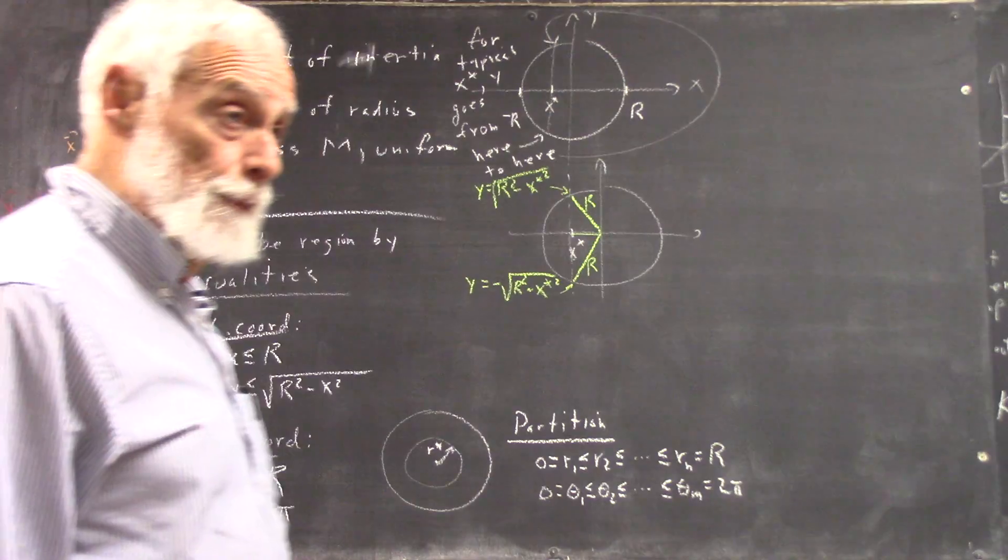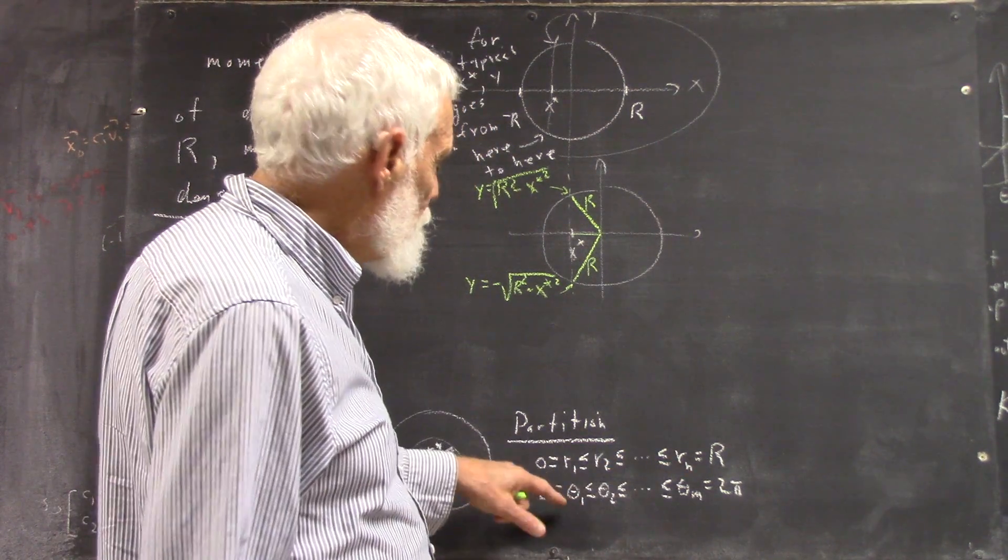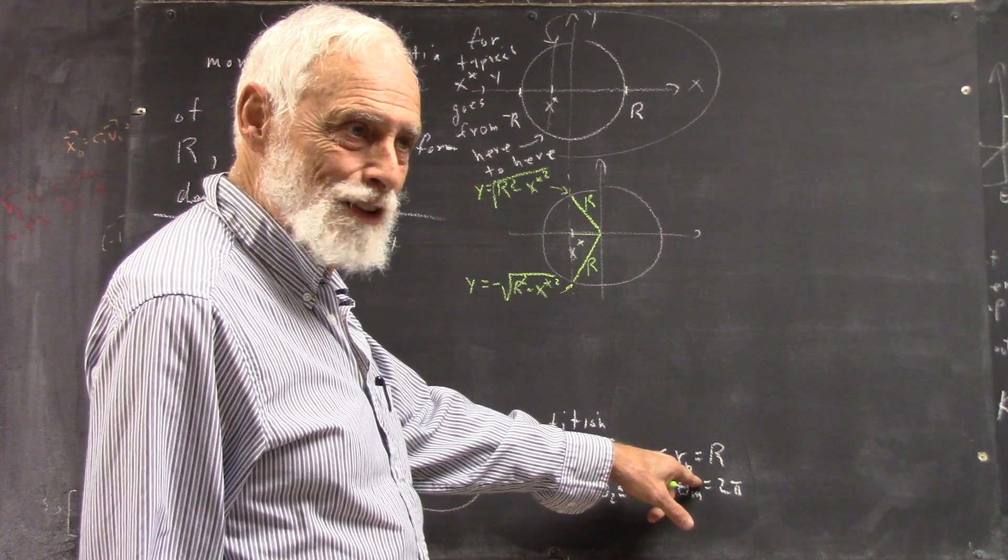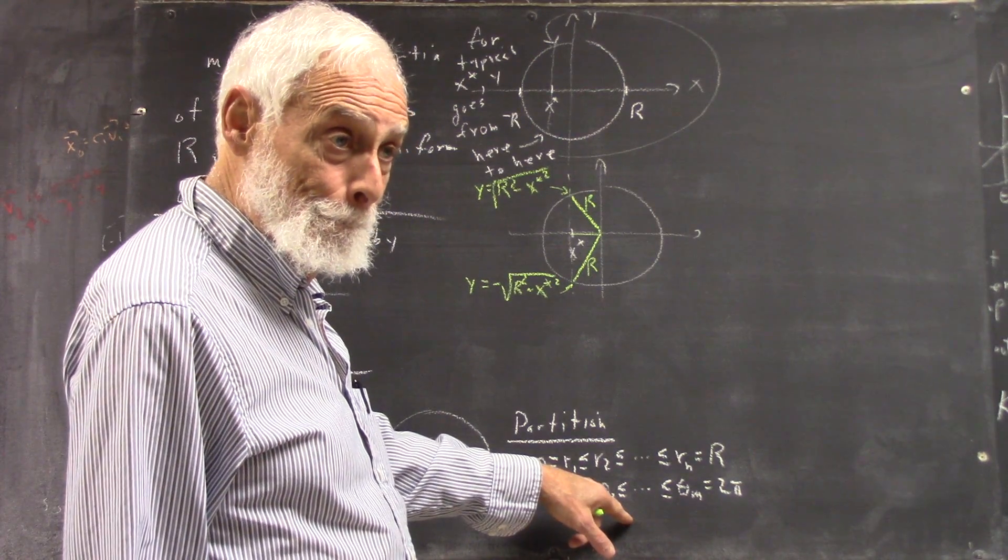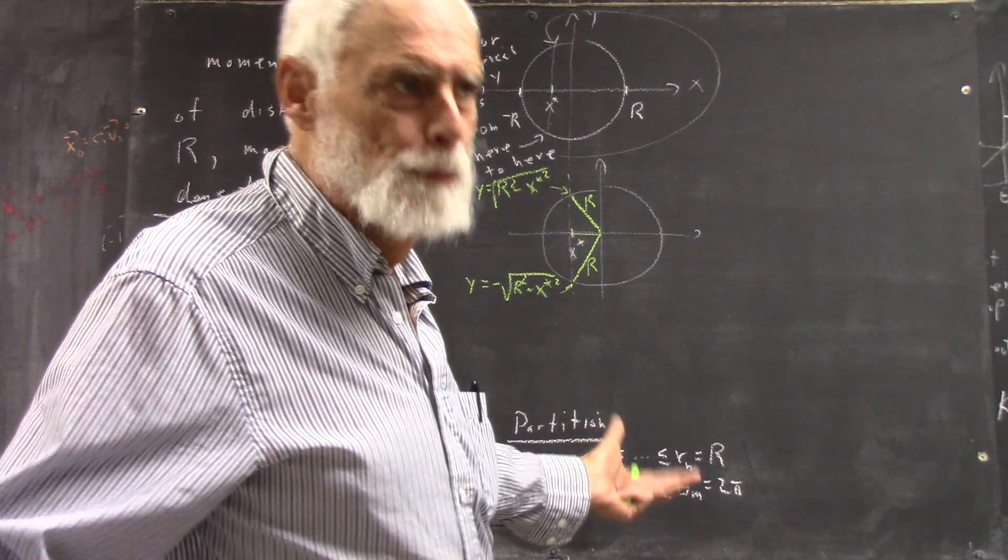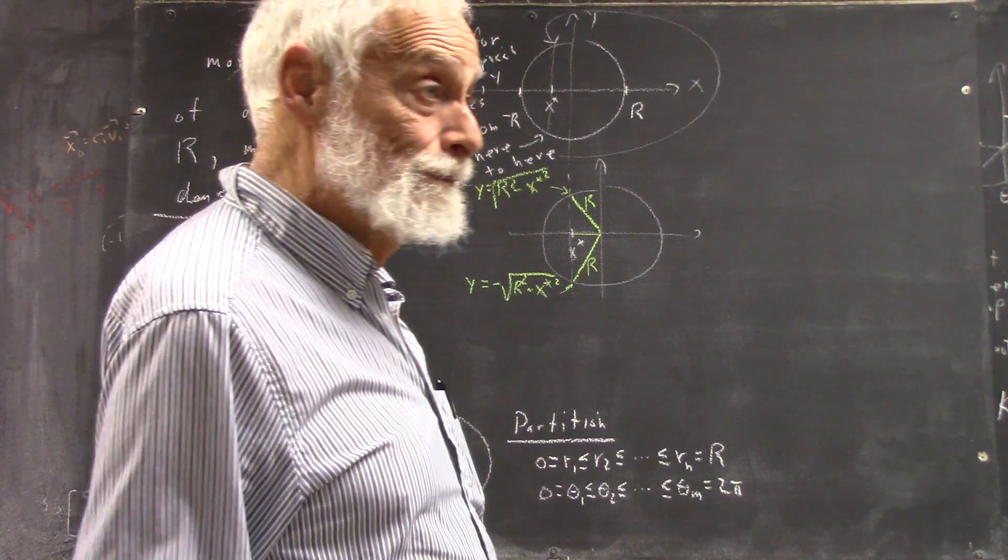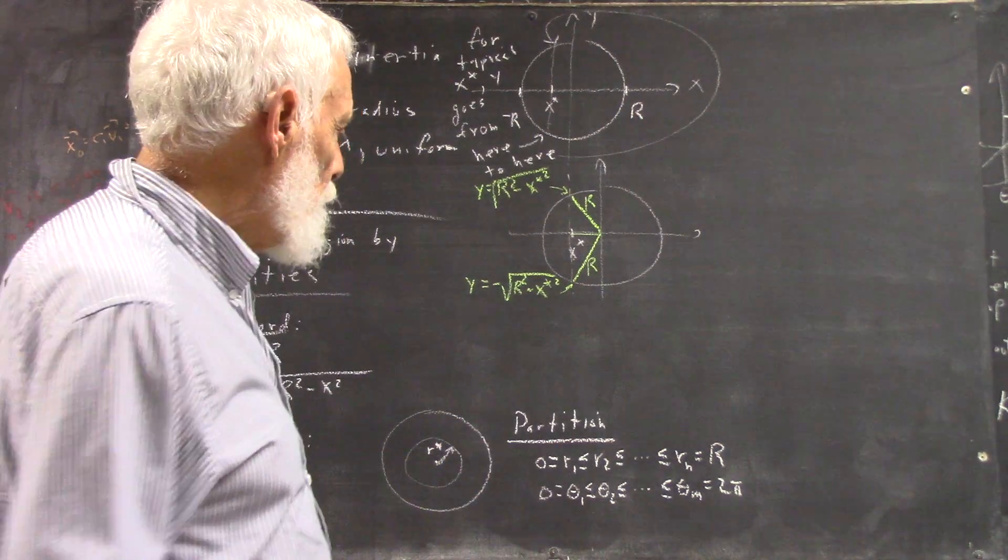There we have it. Okay, now use n and m because we don't want to confine ourselves to having the same number of partitions for this one as we do for this variable, right? Okay, although we could, it really would be okay, just in general it's not a good idea to write it that way. Okay, write it more generally, just to be in the habit of writing things generally.